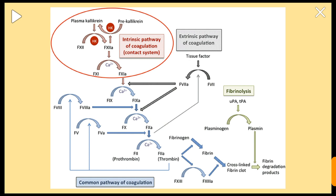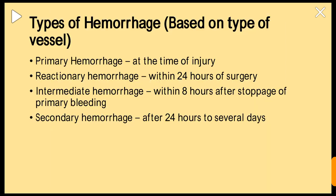Factor XIIIa stabilizes soluble fibrin and forms an insoluble cross-linked fibrin clot, which is very stable. This process has to be regulated — otherwise the fibrin clot would occlude blood vessels. It is regulated by fibrinolysis via plasmin.